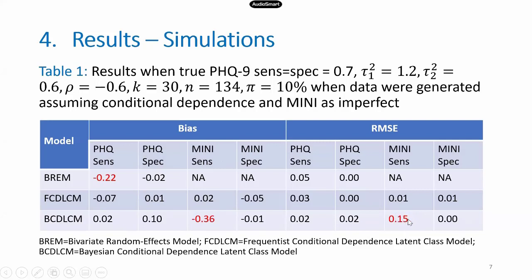The underestimation of reference standard sensitivity by the Bayesian model is mainly because of the prior choices made. We used semi-informative priors for sensitivities and all other parameters. If we had used more informative prior information, performance would have been much better. The Bayesian latent class model is highly sensitive to the prior information used.